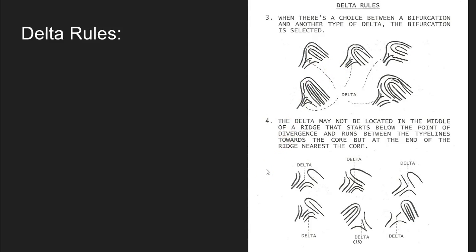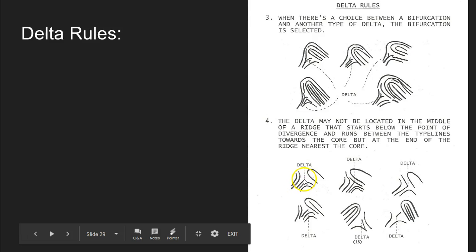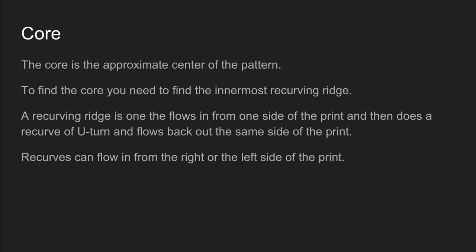Another rule: the delta may not be located in the middle of a ridge that starts below the point of divergence. For example, if a short ridge sits between two type lines and we can choose either end of that ridge, we always choose the end that's past the point of divergence. So we would choose the end of the ending ridge closest to the divergence area as our delta. The delta is important both as a loop requirement and because it helps us determine the ridge count, which we'll cover in our next video.